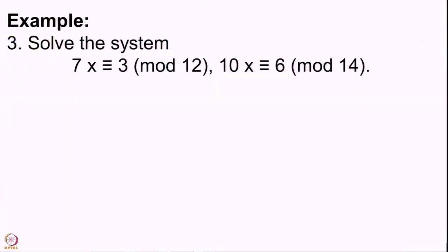Welcome back. In our last lecture we proved the Chinese Remainder Theorem and did two basic examples where we solved systems of simultaneous linear congruences. Now we are going to do some problems where the systems are slightly different. We cannot readily apply the Chinese Remainder Theorem, but we can modify the systems slightly so that we can apply the CRT. Since we have done problems 1 and 2 in the previous lecture, we will name this as problem number 3.